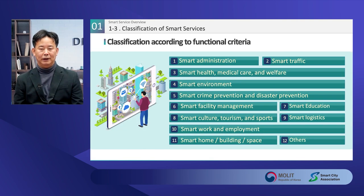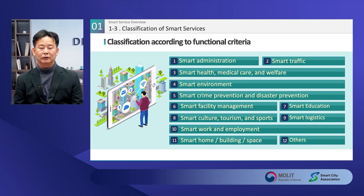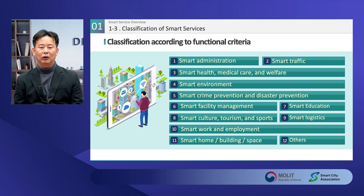How can we classify smart services? It is most common to classify them according to the government's functional classification criteria. They can be divided into 12 areas including administration, transportation, health, medical, welfare, and the environment. The weakness of this classification is that it is difficult to integrate because of functional variance, as it has a structure operated by individual departments. Personally, I prefer to classify smart services by technology type. If services are classified based on technologies such as CCTV type, general sensor type, display type, and data type, the integration and linkage of services are easier through standardization of technology.